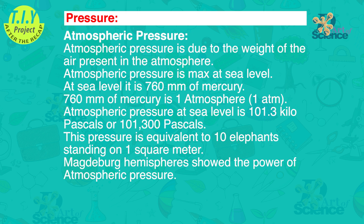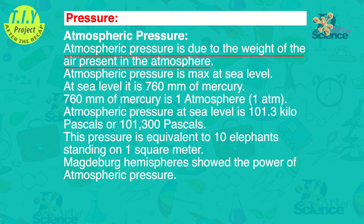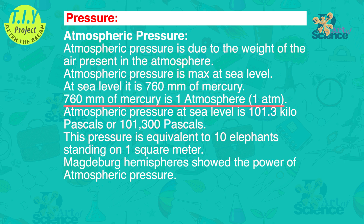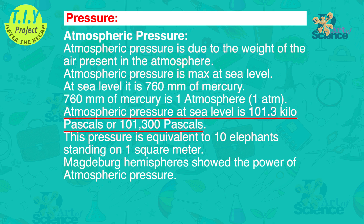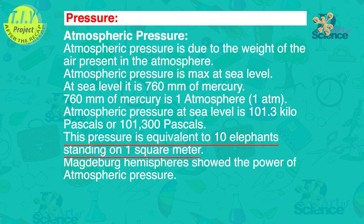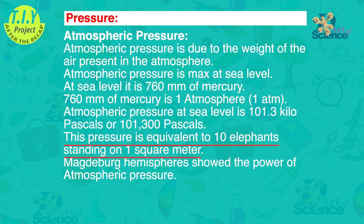Air has weight. Atmospheric pressure is due to the weight of the air present in the atmosphere. Atmospheric pressure is maximum at sea level — it is 760 mm of mercury at sea level, which is called one atmosphere. Atmospheric pressure at sea level is 101.3 kilopascals or 101,300 pascals, equivalent to 10 elephants standing on one square meter. The experiment with Magdeburg hemispheres showed us the power of atmospheric pressure.